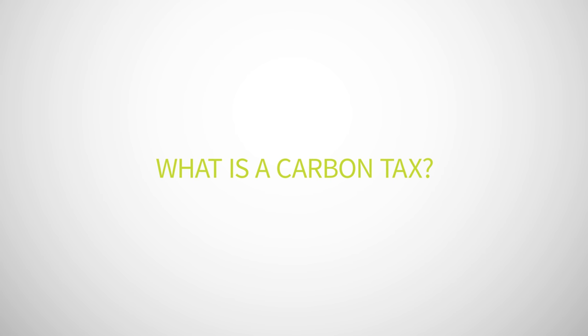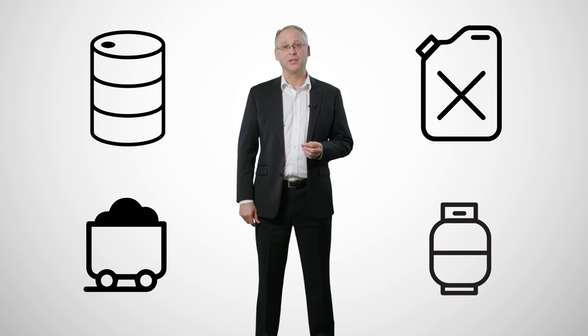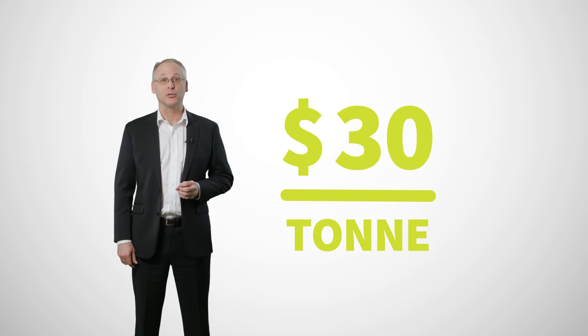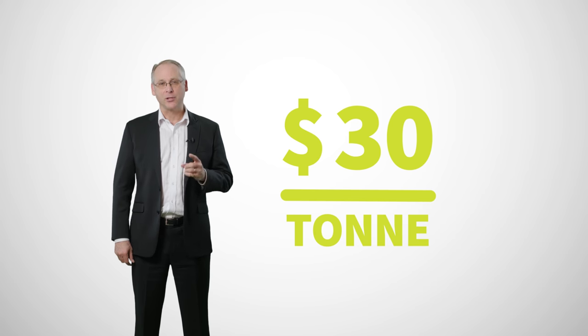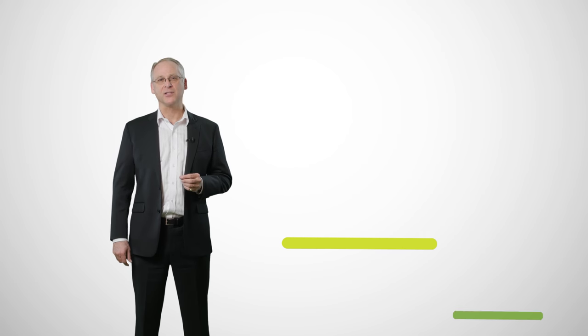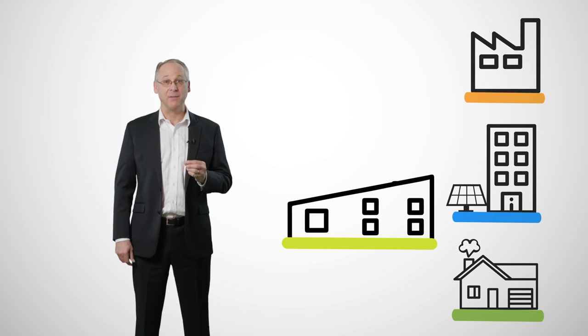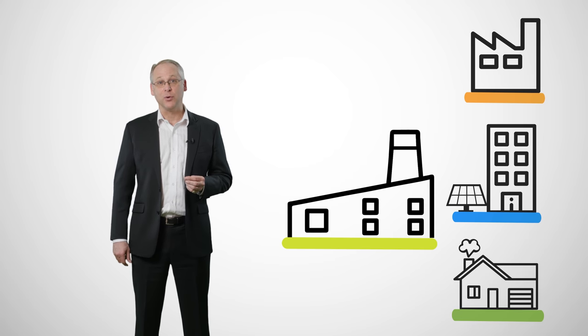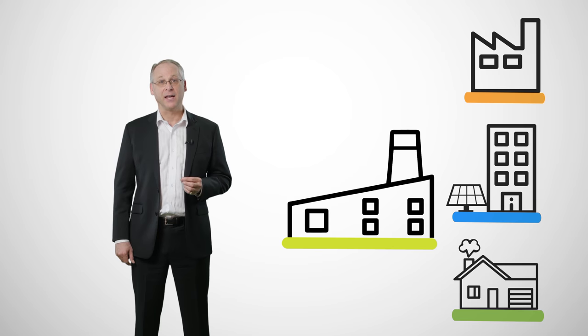A carbon tax sets the price of carbon emissions directly. It applies to different fuels based on their carbon intensity. Anyone who emits greenhouse gases pays that fee to the government — for example, $30 per ton of GHGs. That carbon price incentivizes households and businesses to find ways of doing things to reduce their emissions and to avoid having to pay the tax.